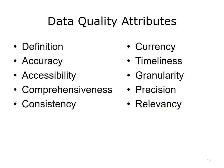Data quality is a complex topic, and it is affected by more than just the accuracy of data. A review of the literature yields a number of terms that can be used to describe data quality attributes. The DQM model attributes include definition, accuracy, accessibility, comprehensiveness, consistency, currency, timeliness, granularity, precision, and relevancy. Each of these attributes will be described and an example will be provided, as well as key process issues that HIT professionals should consider for effective health information exchange.